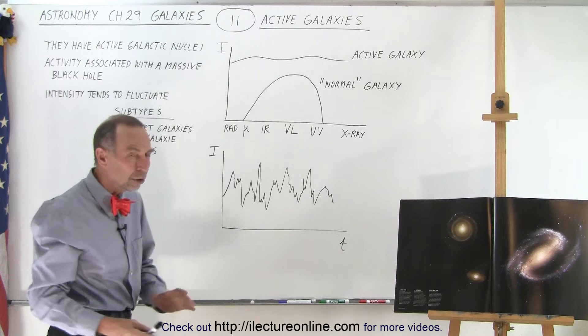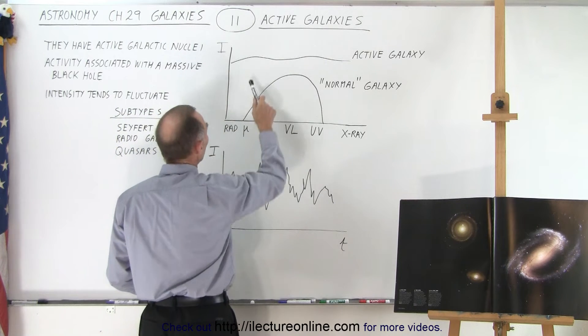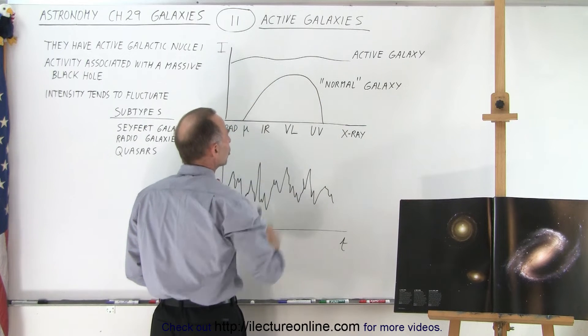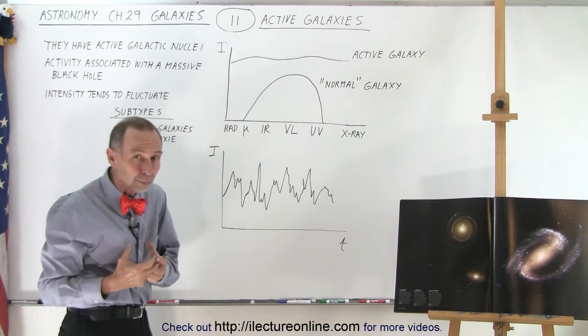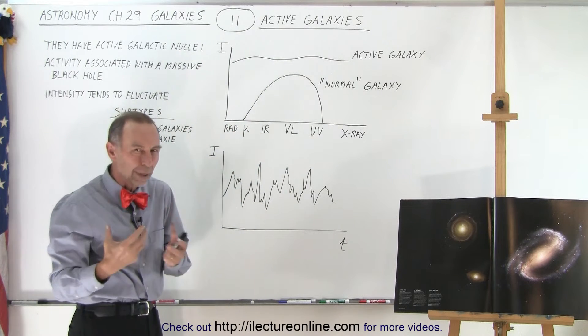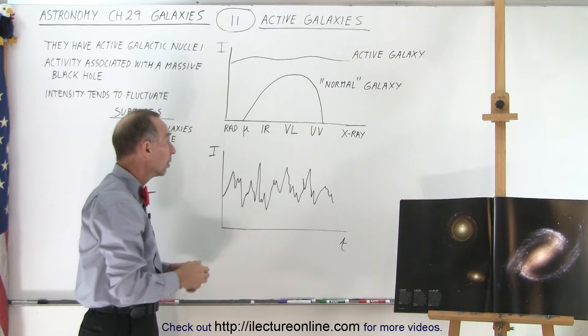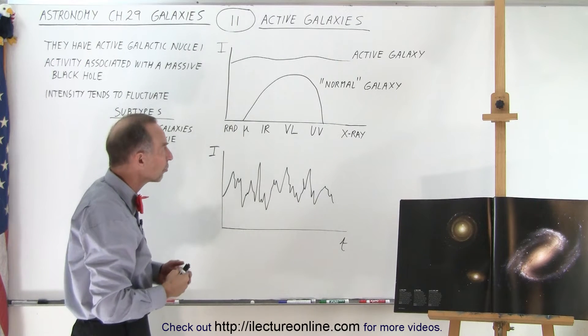When you look at the intensity curve of an active galaxy, notice that it puts out all wavelengths at a much higher intensity than any wavelength from a normal galaxy. That unusual activity at the center produces all kinds of radiation, including microwaves, radio, UV, and even X-rays at fairly high quantities.